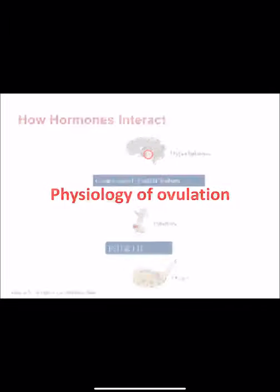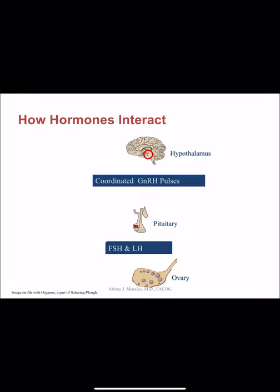Before discussing anovulation, we need to know the physiology of ovulation. The process starts from the hypothalamus, which secretes gonadotrophin-releasing hormone. This acts on the anterior pituitary gland, which secretes FSH and LH. FSH acts on follicular growth, causing maturation of the follicle — every day the follicle increases by two millimeters.